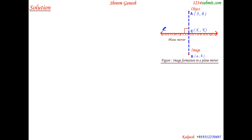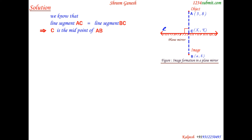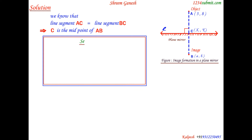Since line segment AC equals line segment BC, C is the midpoint of AB. We can now find the coordinates of point C in terms of the coordinates of points A and B using the section formula. Let us discuss the section formula.